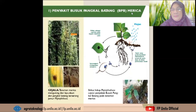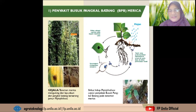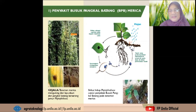Penyakit busuk pangkal batang pada lada: gejalanya tanaman merica menguning dan layu, daun dan pangkal batang terserang jamur Phytophthora. Siklus penyakitnya bermula dari tanah yang terkontaminasi Phytophthora, terpercik pada daun di dekat permukaan tanah. Selanjutnya, sporangiumnya melepaskan zoospora dan kemudian hidup sebagai saproba pada bagian tanaman yang sakit.